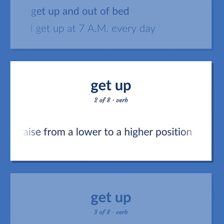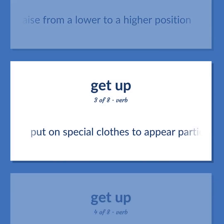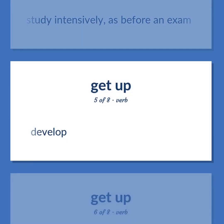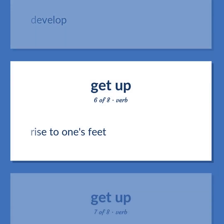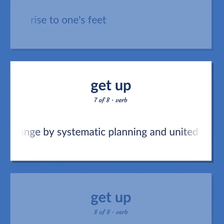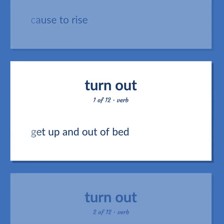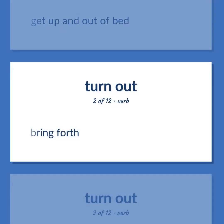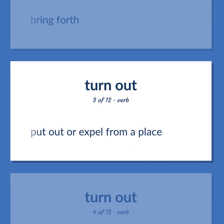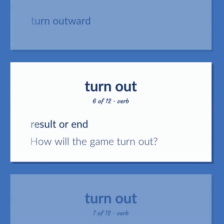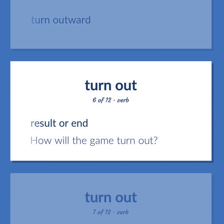Turn out. Raise from a lower to a higher position. Put on special clothes to appear particularly appealing and attractive. Study intensively, as before an exam. Develop. Arrange by systematic planning and united effort. Cause to rise. Get up and out of bed. Bring forth. Put out or expel from a place. Be shown or be found to be. Turn outward. Result or end — how will the game turn out?